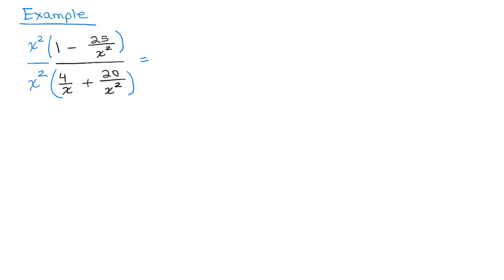So we have to do the distributive property. x squared times 1 is x squared minus... Now, what's going to happen when I multiply x squared times 25 over x squared? The x squares will cancel. So I just have x squared minus 25.